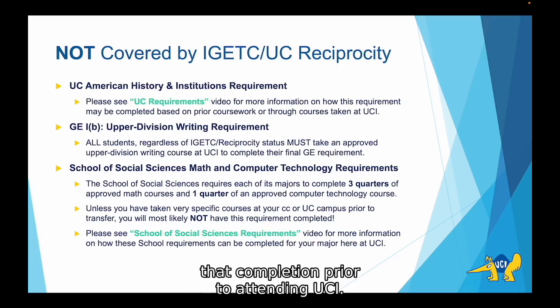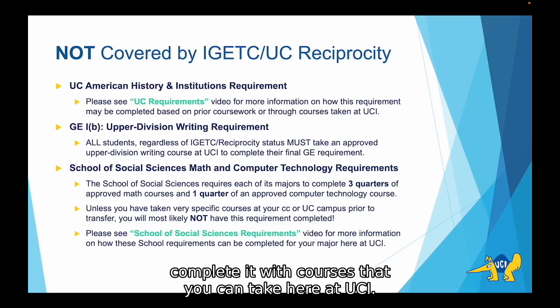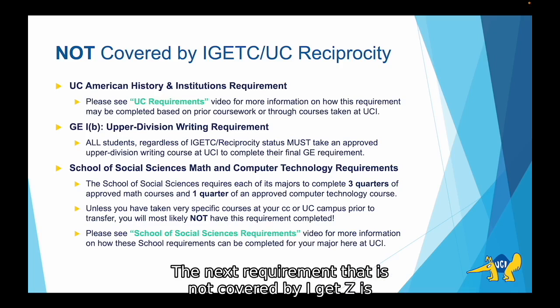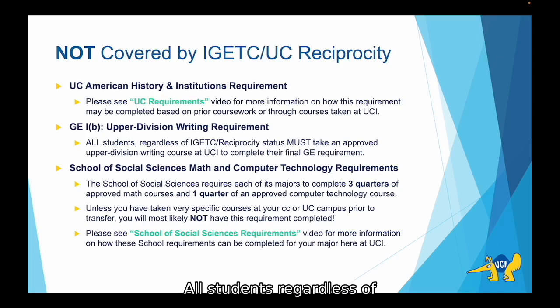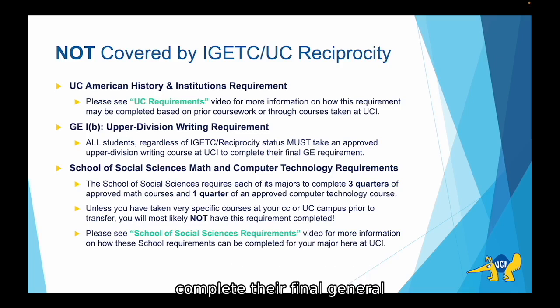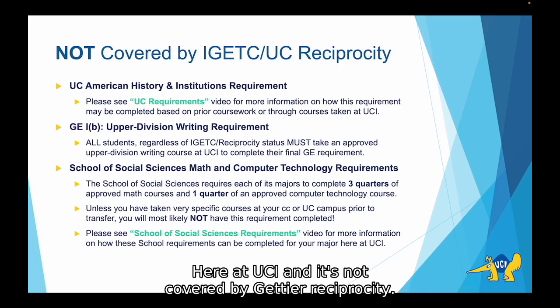If there's additional information you need to submit to admissions to clear the American History requirement, you'll hear about it in that video. Or if you don't have that completion prior to attending UCI, that video will also give you more info on how you can complete it with courses here at UCI. The next requirement not covered by IGETC is the one and only upper division GE requirement: our upper division writing requirement. All students, regardless of IGETC or reciprocity status, must take an approved upper division writing course. This is true for transfers, freshmen, and everybody, and this course must be taken here at UCI.